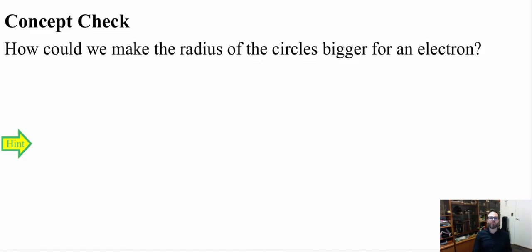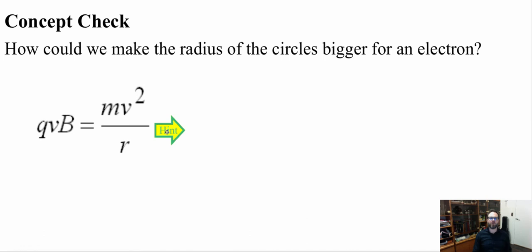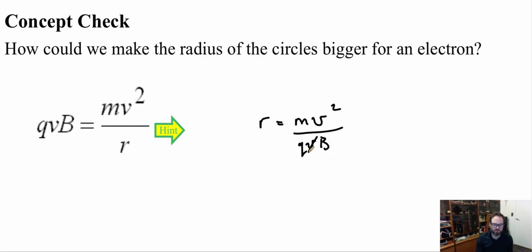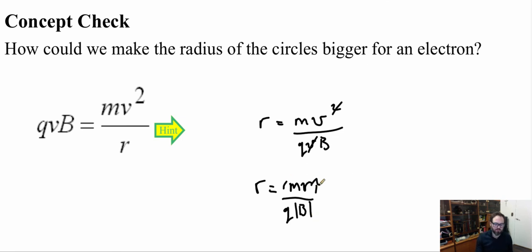How could we make the radius of the circle bigger for an electron? Using the formula derived from centripetal force equals magnetic force and rearranging: radius = m·v / (q·B). So if we increase either the mass or the velocity, we increase the radius. If we decrease either the charge or the magnetic field strength, we also increase the radius.